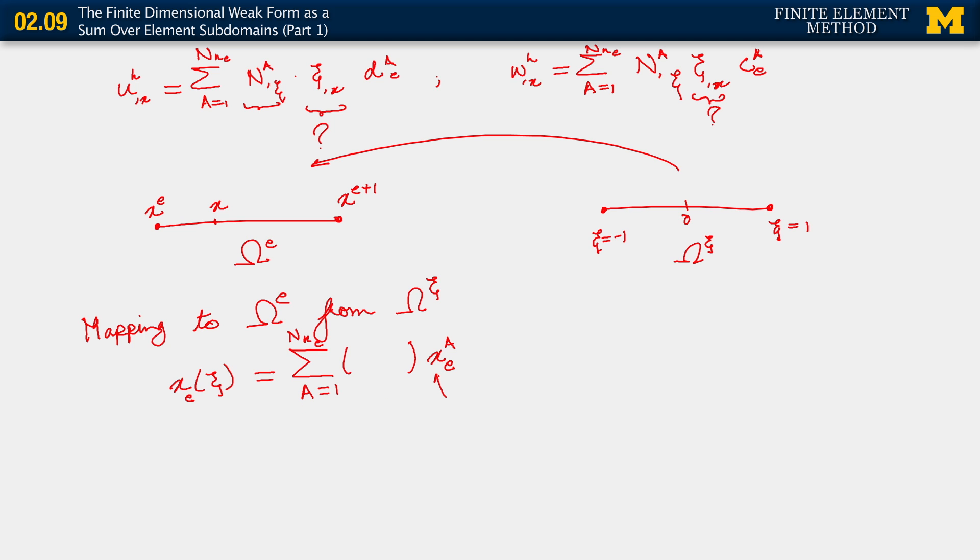Now, we're going to have the sum running over the number of nodes in each element, right? That is a equals 1 to n_n_e. When I write x_{a,e}, what I mean here is for a equals 1, I'll get x1,e, and I get x2,e. These are equal to my global nodes, x_e, and x_{e+1}. The coordinate x1,e is the same as the coordinate x_e, but when I write x_e, I'm viewing that as a global node. The coordinate is the same. Likewise, x2,e simply is the second node of element e. Well, globally, that is just global node number e plus 1.